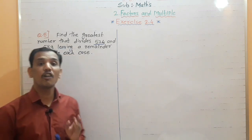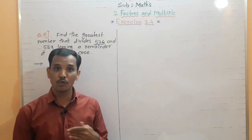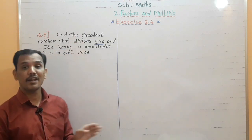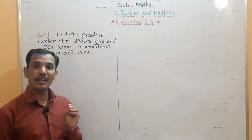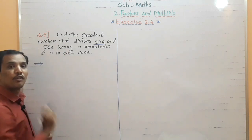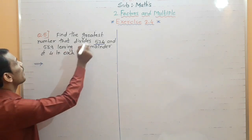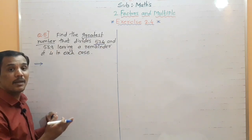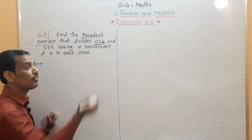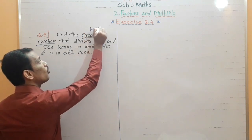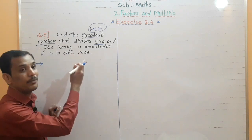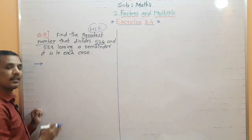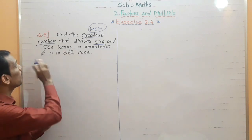When you have a word problem, never just glance at it once and give up. Read it two times, three times, five times, ten times — read until you have a proper understanding. Now reading again: 'find the greatest number' — greatest number means greatest common factor, which is the HCF. Yes, you are right. HCF is what we need here.